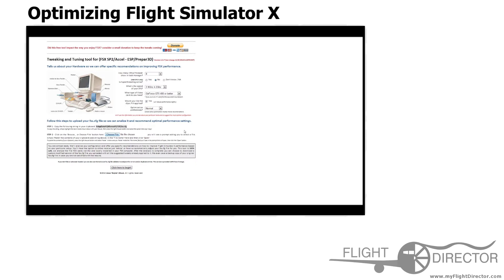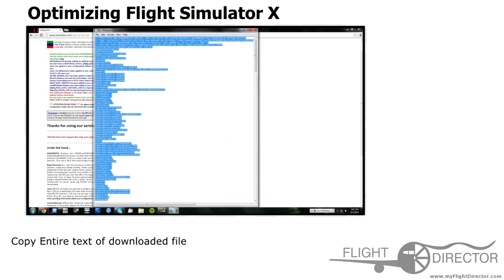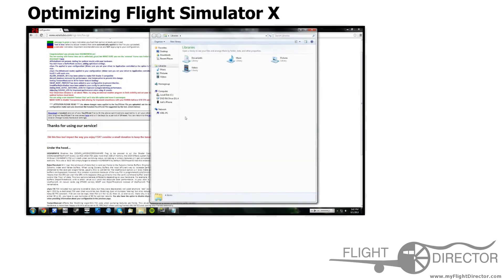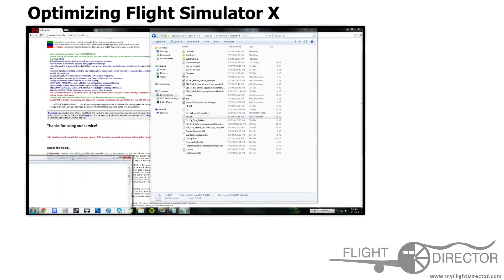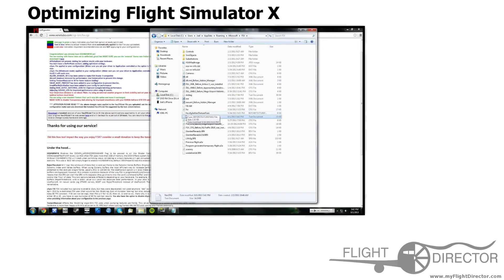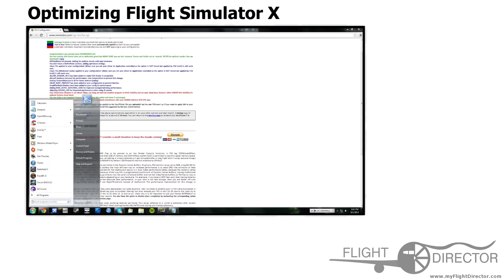Once you have all that set, you want to find your FSx.cfg file. It's going to be under Users, whatever your username is, AppData, Roaming, Microsoft, FSx — it should be right under there. Copy the entire generated config, Control C, and go into your FSx.cfg file, then Control V and save. You may want to make a backup, but if needed you can delete the file and Flight Simulator will generate a new one.